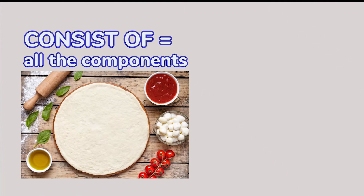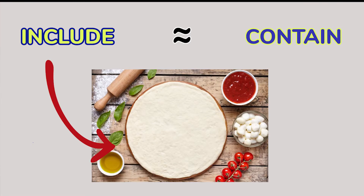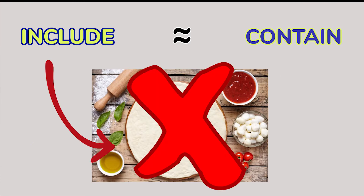So, consist of means all the components of something. Contain means one or just some components. Include is a synonym of contain, but we don't use it with food.